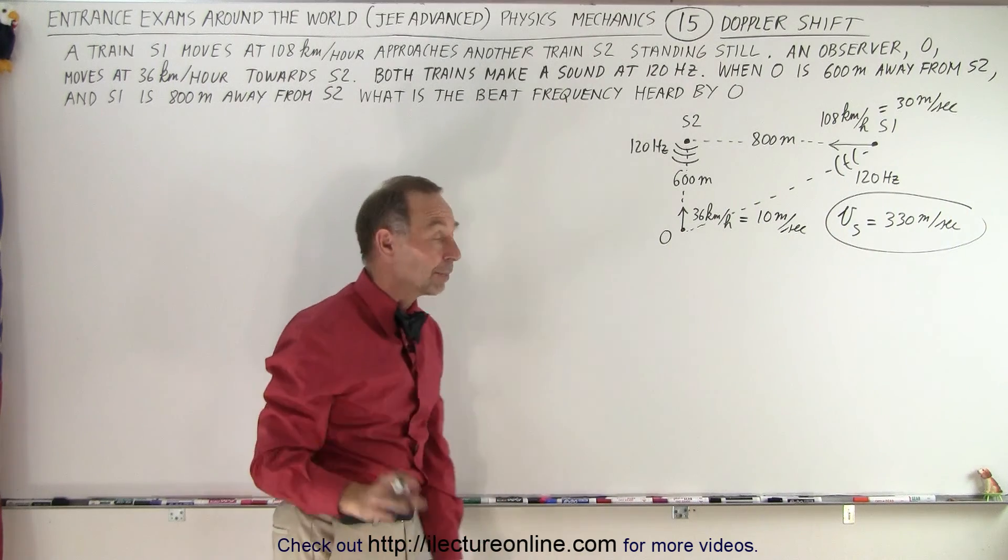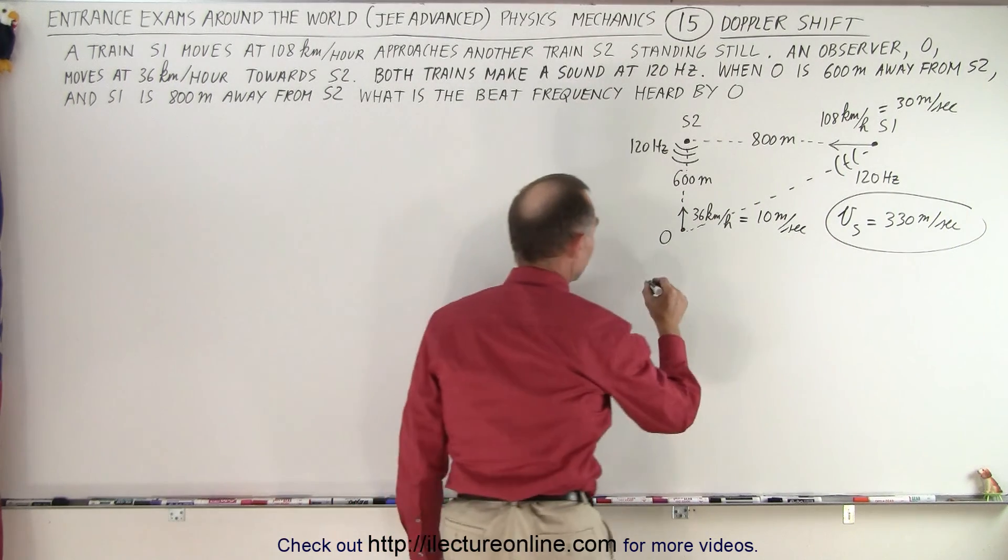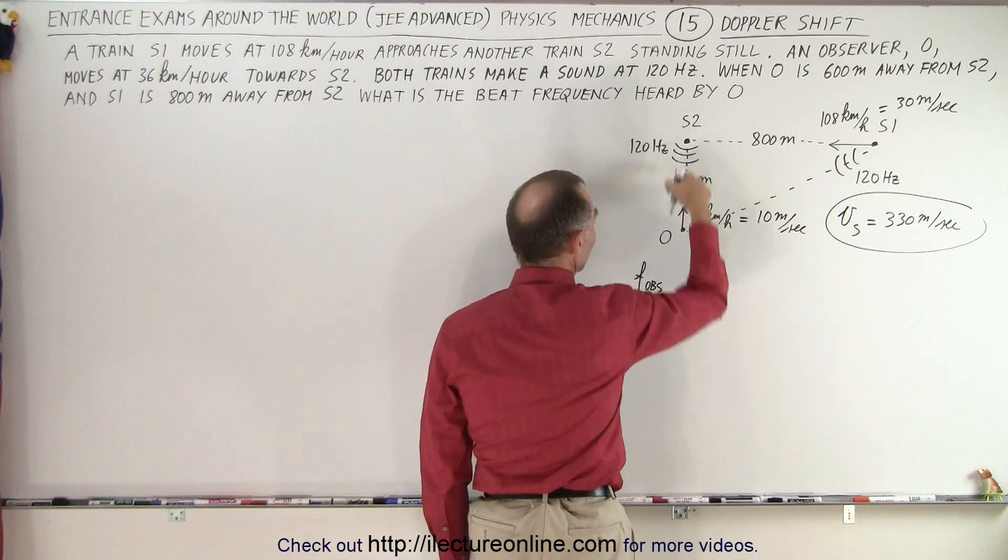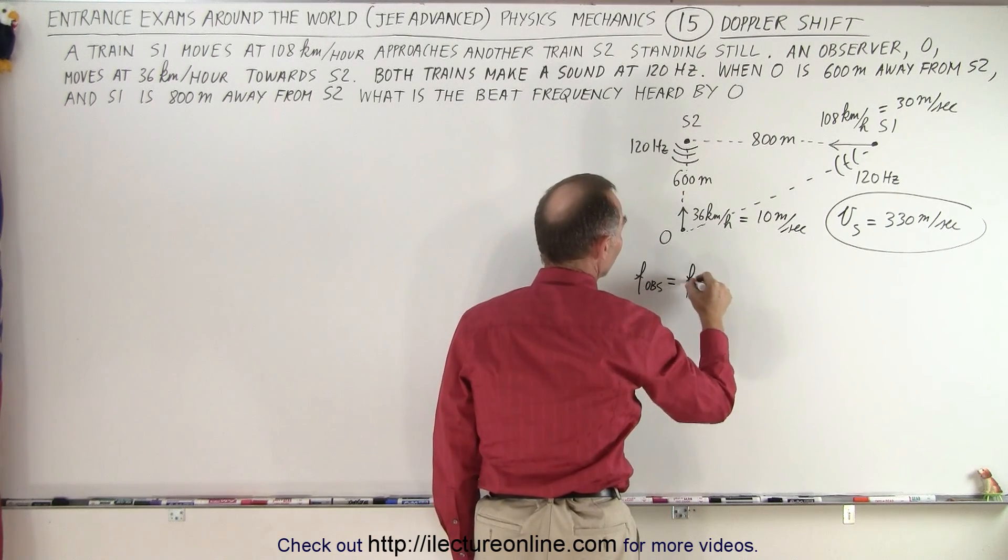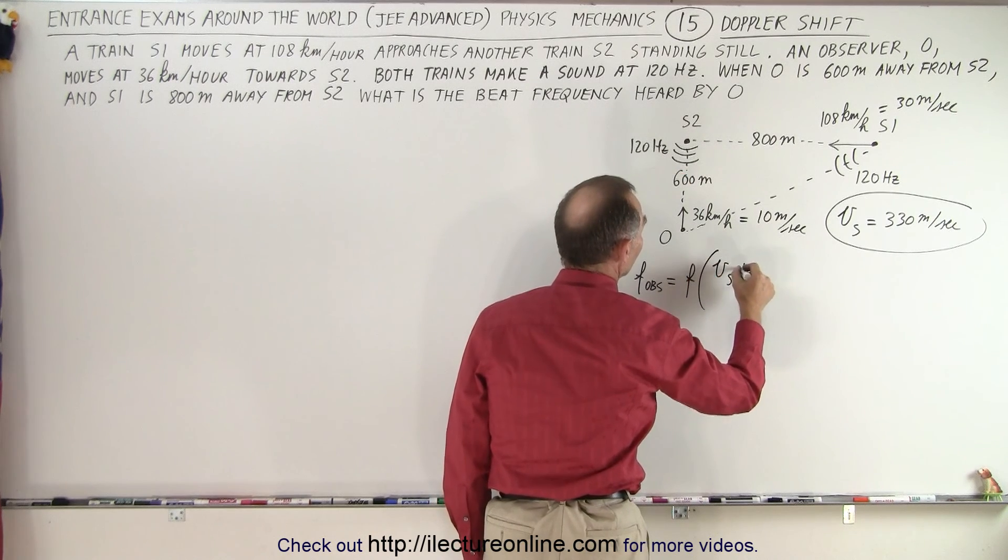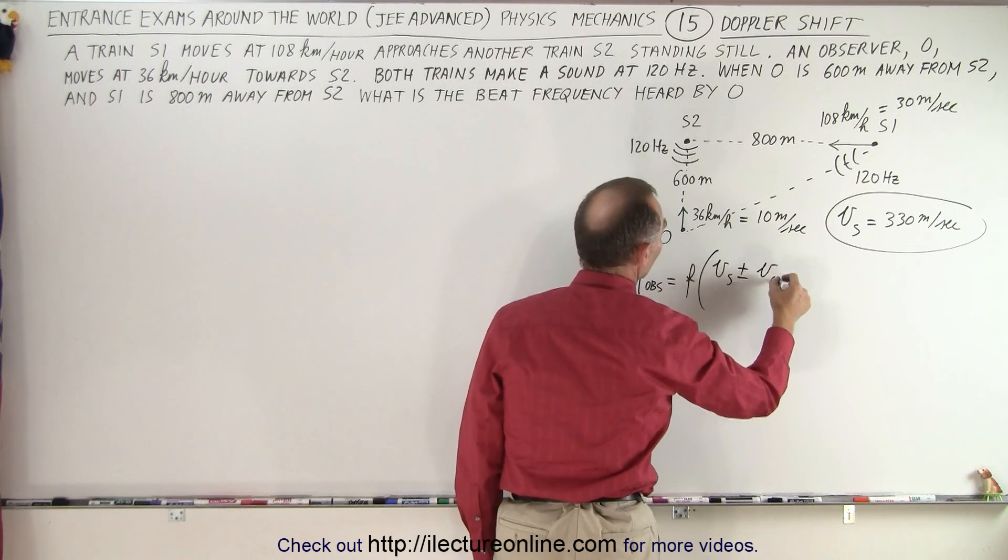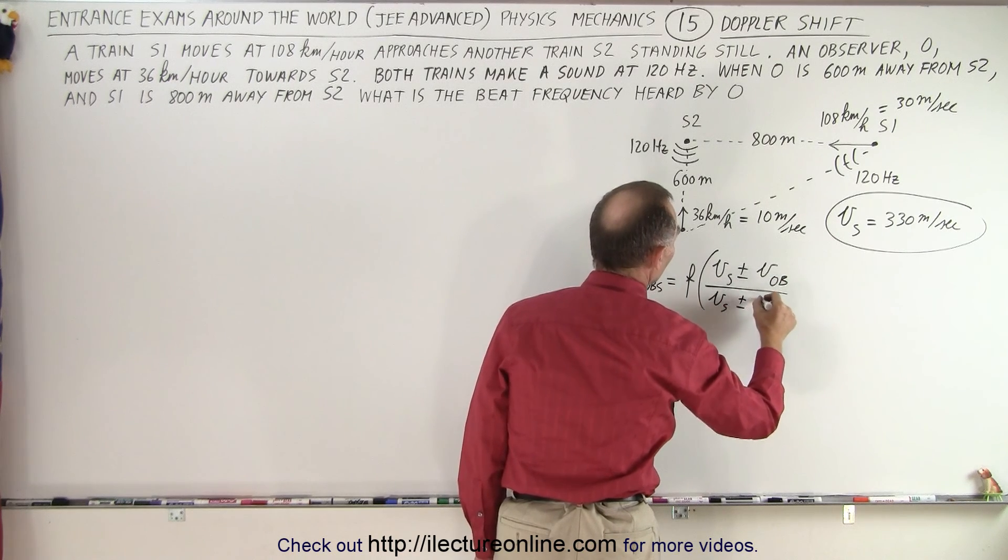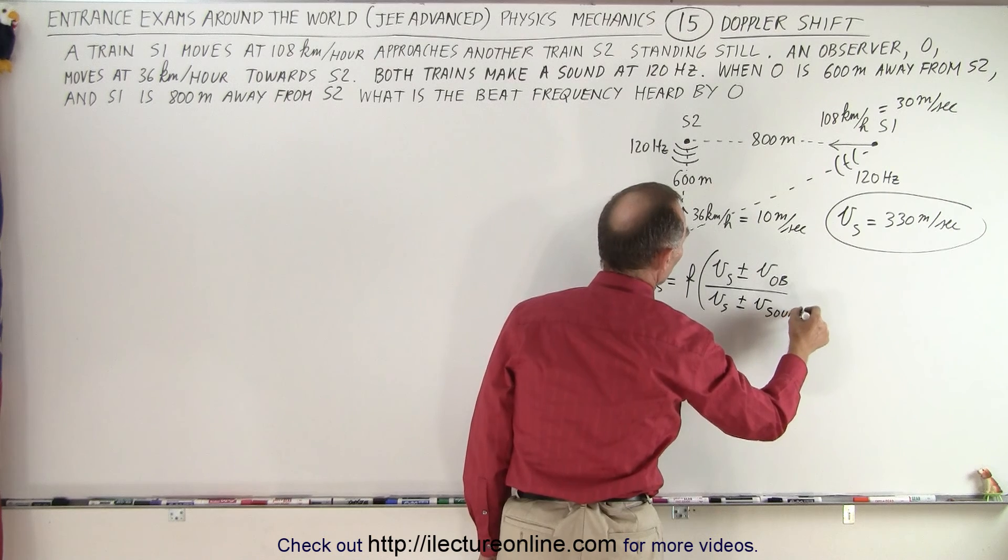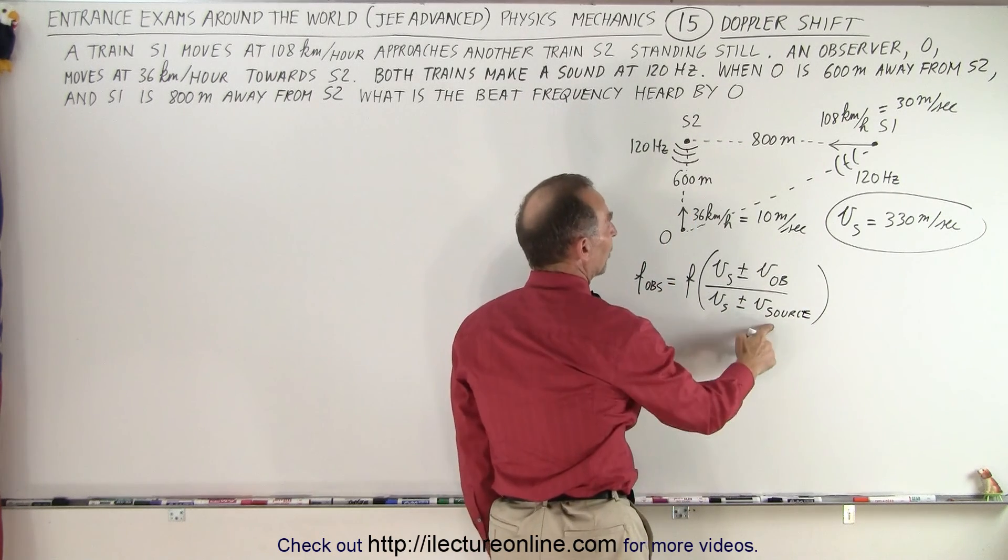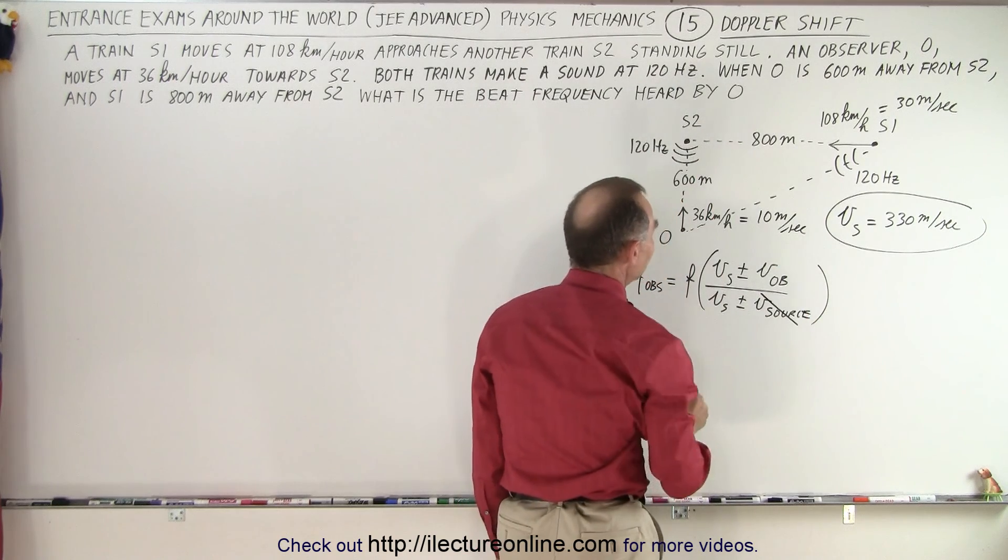Let's now come up with the equation. We can see that the frequency observed, and we're going to do this one first right here, is equal to the frequency that's sounded times the velocity of sound plus or minus the velocity of the observer divided by the velocity of sound plus or minus the velocity of the source. Right away, the source in this case is not moving, so that goes away.